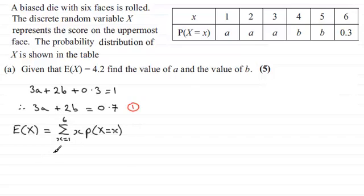So with this that means that therefore what we've got is 1 times a, or in other words a, plus 2 times a plus 3 times a plus 4 times b, 5 times b, 6 times 0.3, when all added together should equal 4.2. So if we just finish this off we've got then a plus 2a plus 3a and then we've got plus 4b plus 5b and then plus 6 times 0.3 which is going to be 1.8 and that should equal the expected value of x which we're told is 4.2.